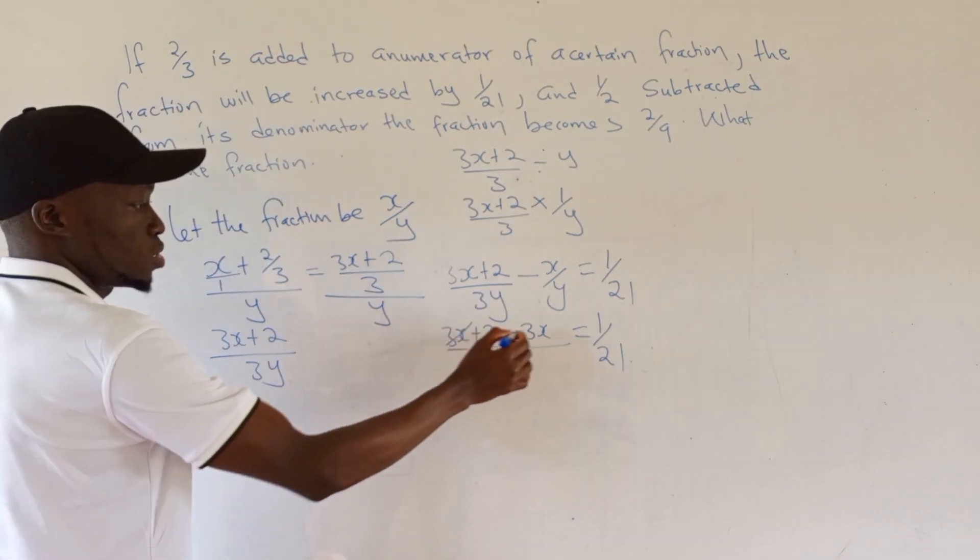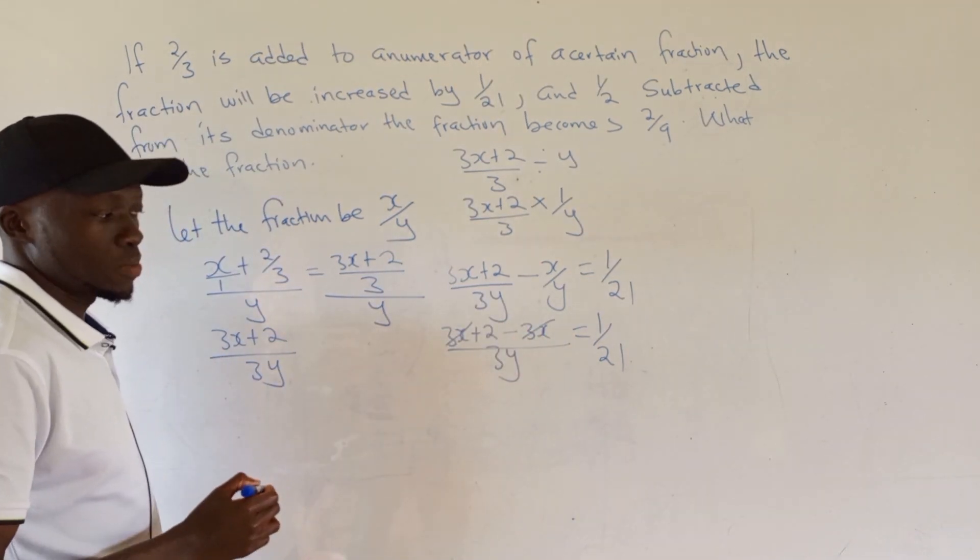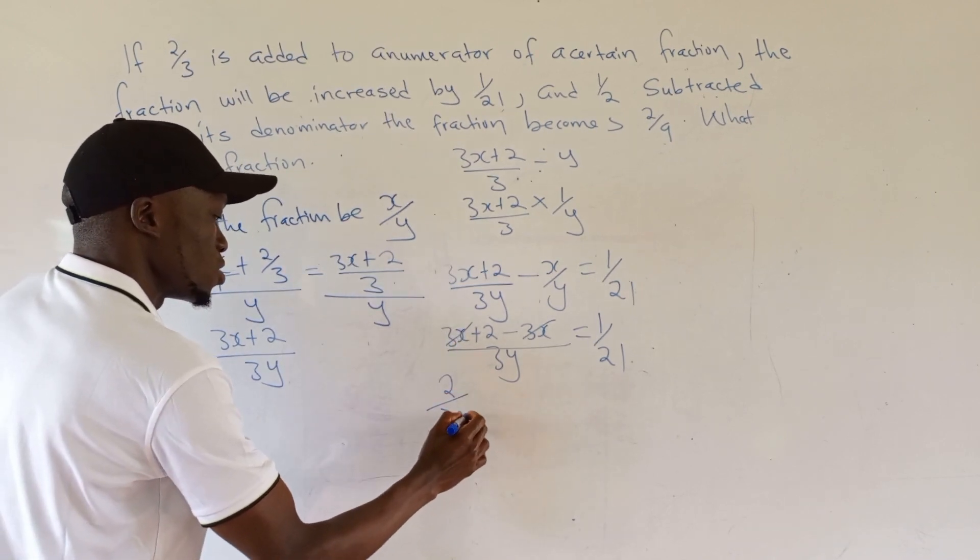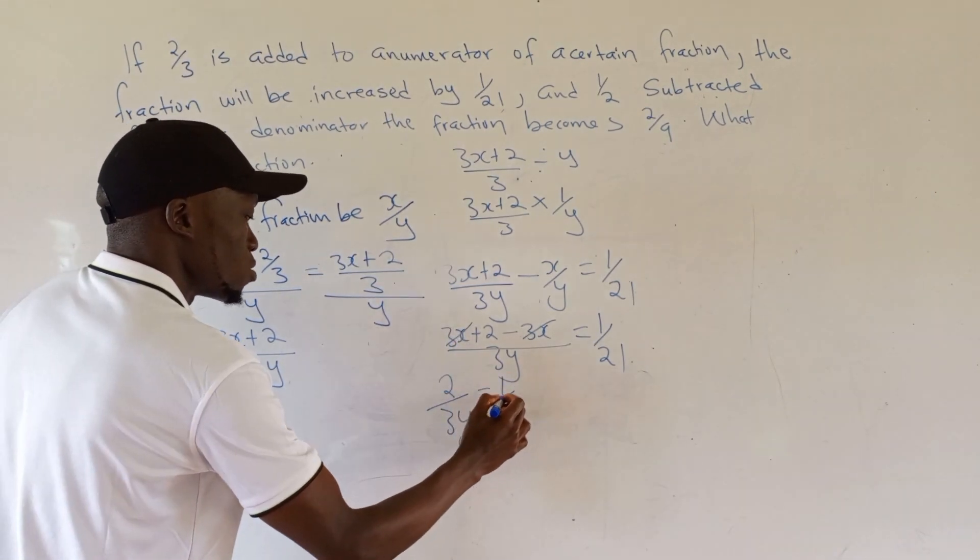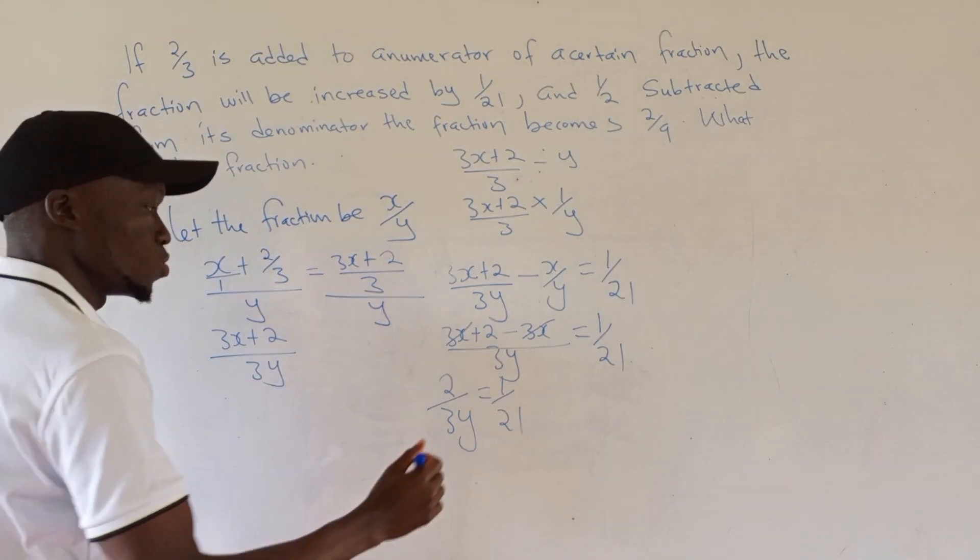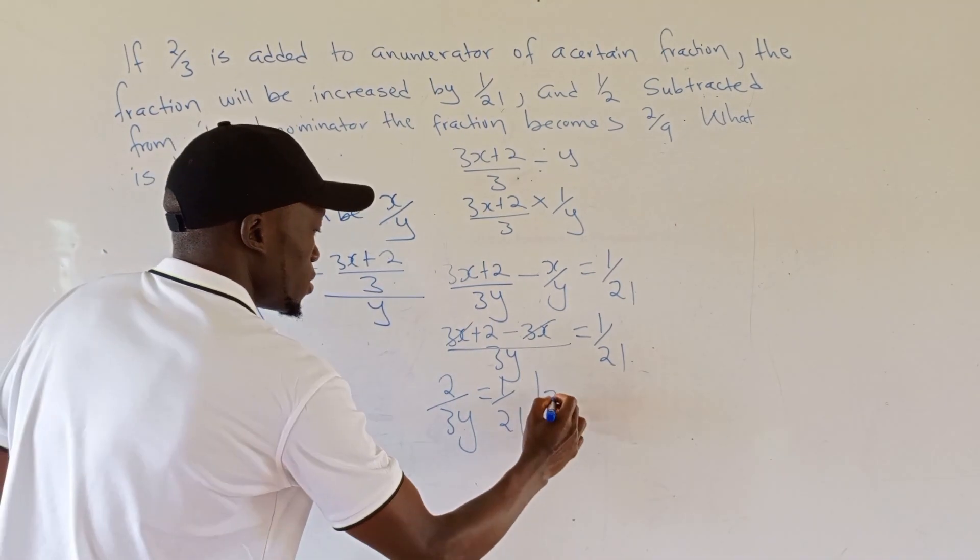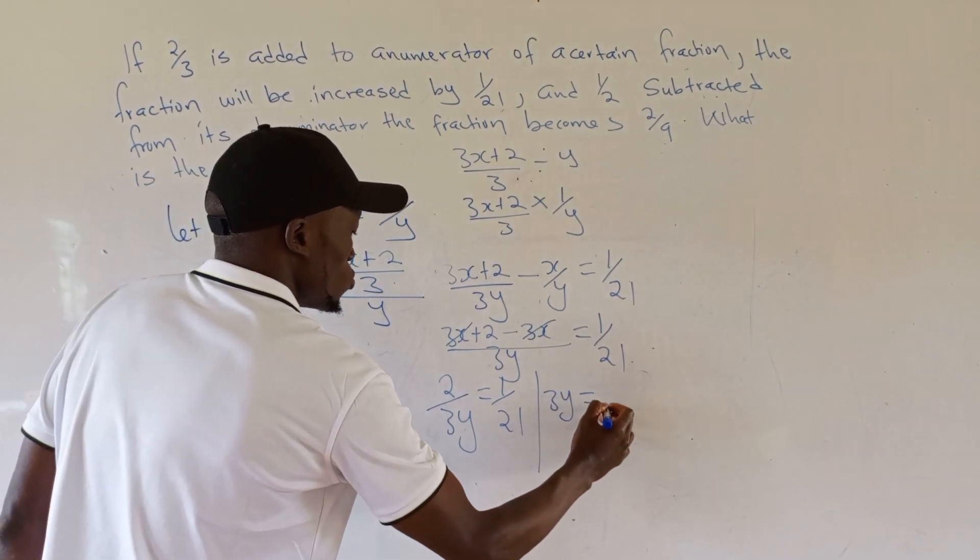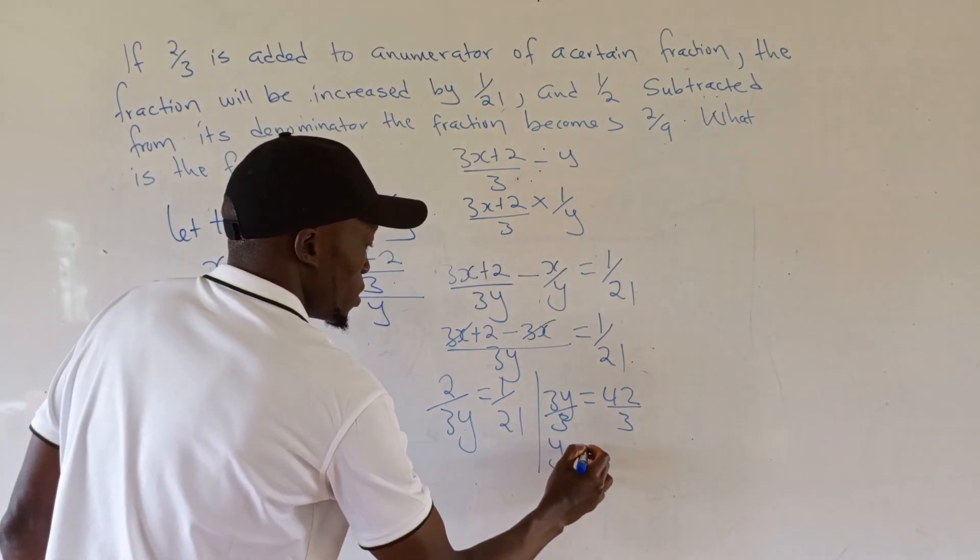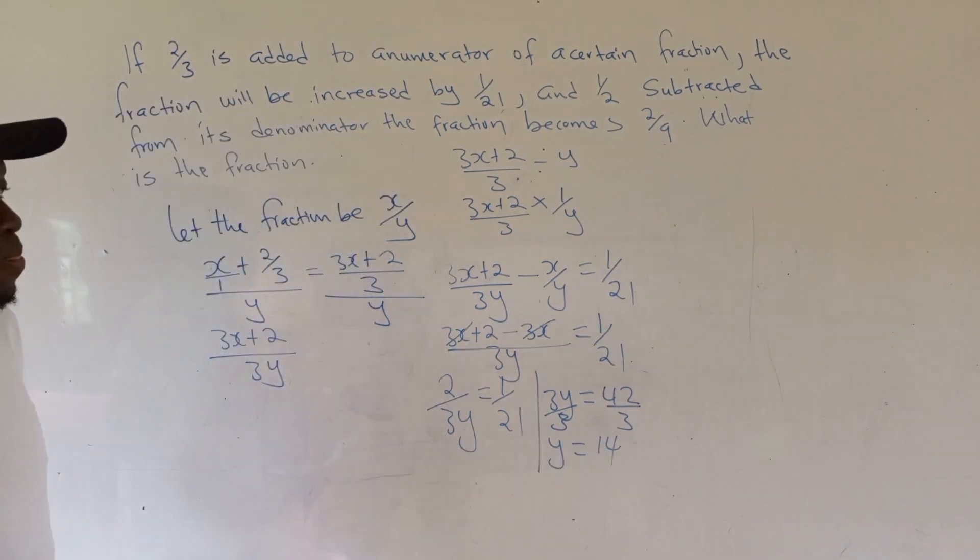When you simplify, 3x minus 3x is 0. So we remain with 2/(3y) = 1/21. Cross-multiplying: 3y = 42. Dividing both sides by 3: y = 14.